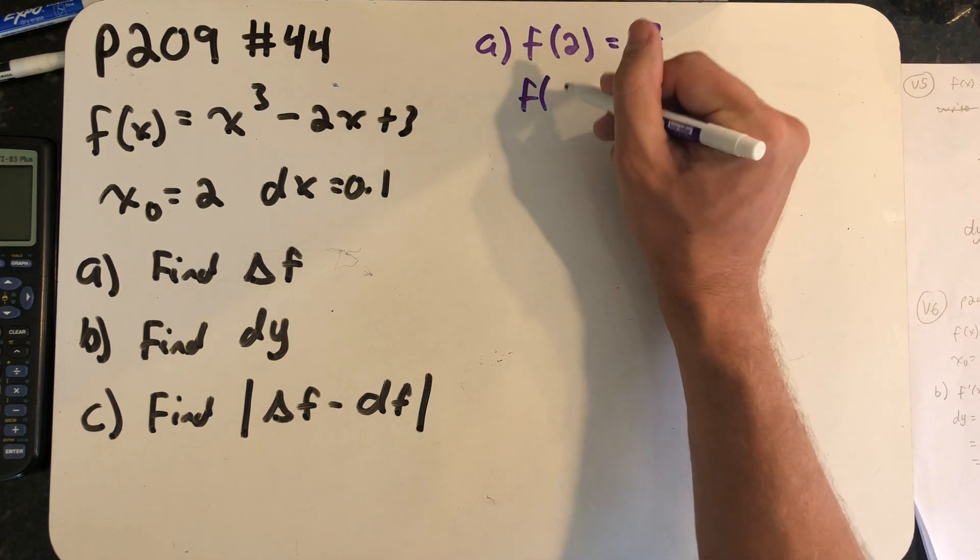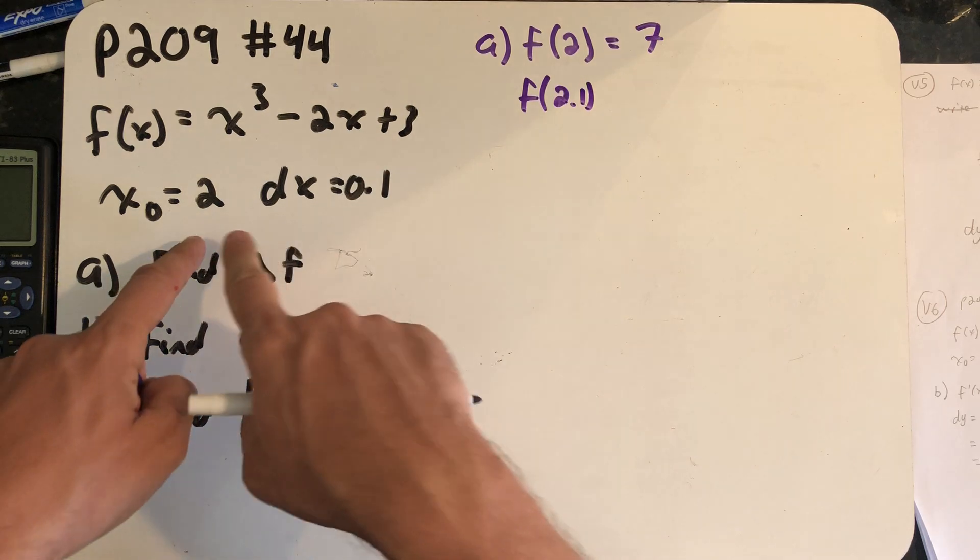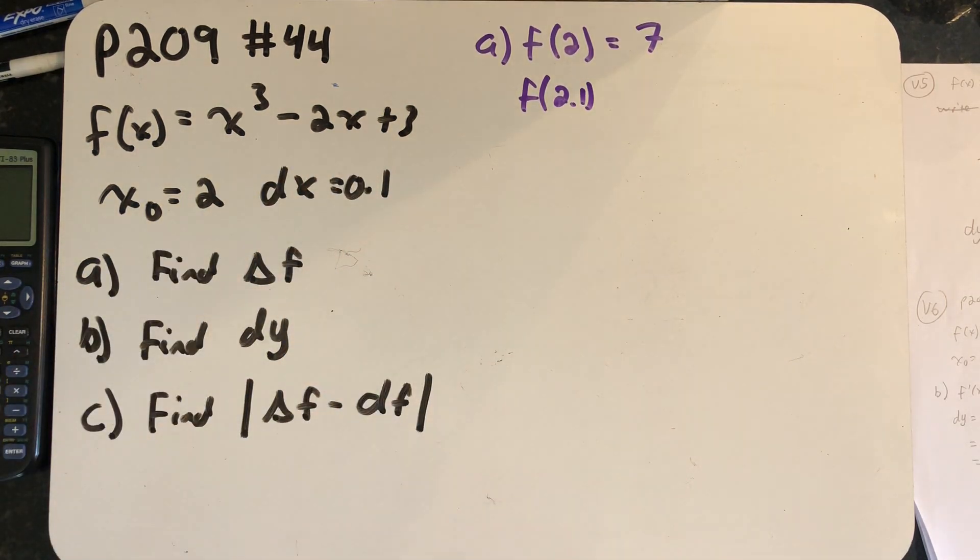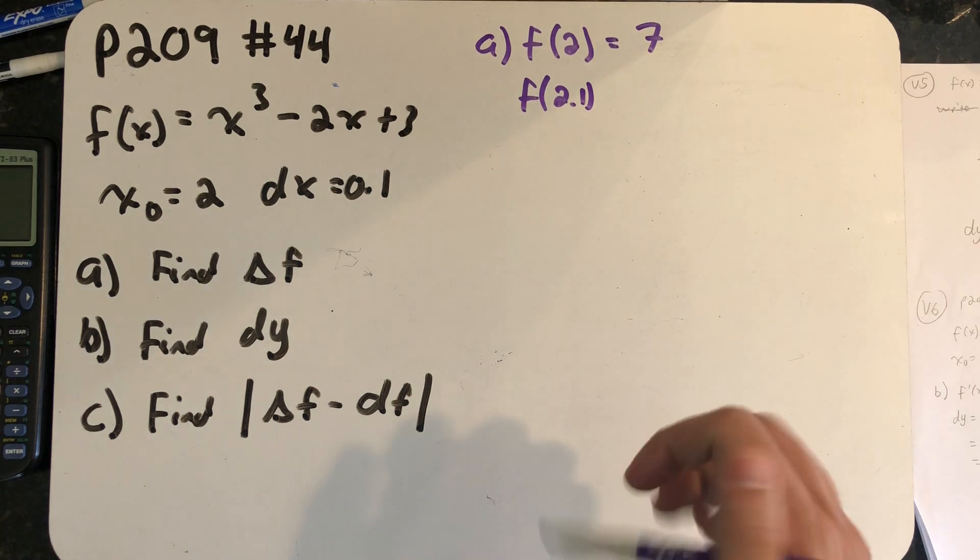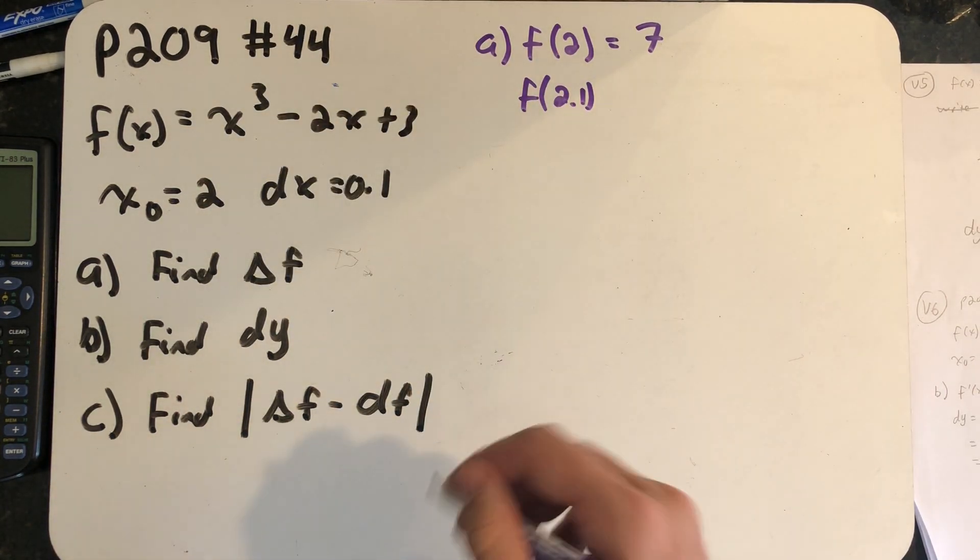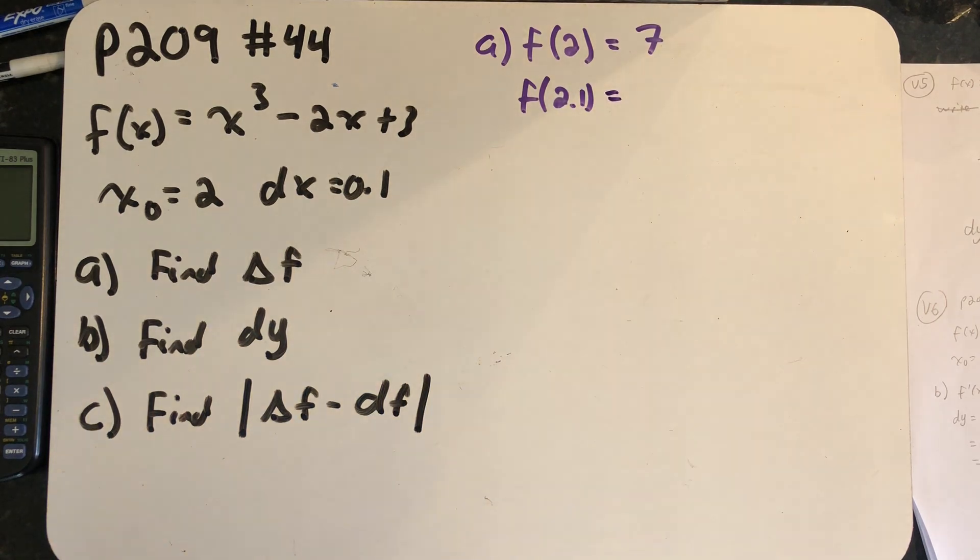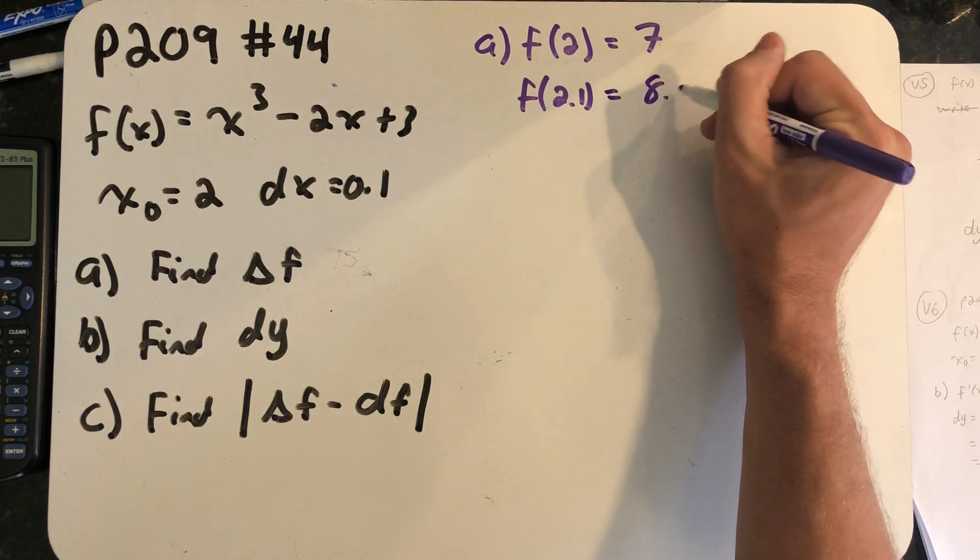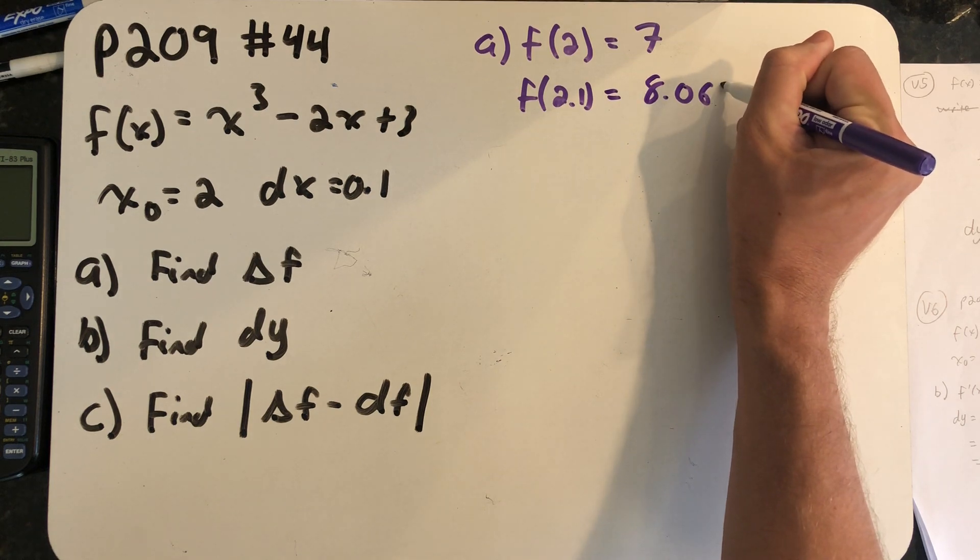And then I need to know f(2.1) because x is changing from 2 to 2.1, right? That's the change in x there on the x-axis. So we have to plug 2.1 into the function, and again take a moment to do that, but you will find out that f(2.1) is 8.061.